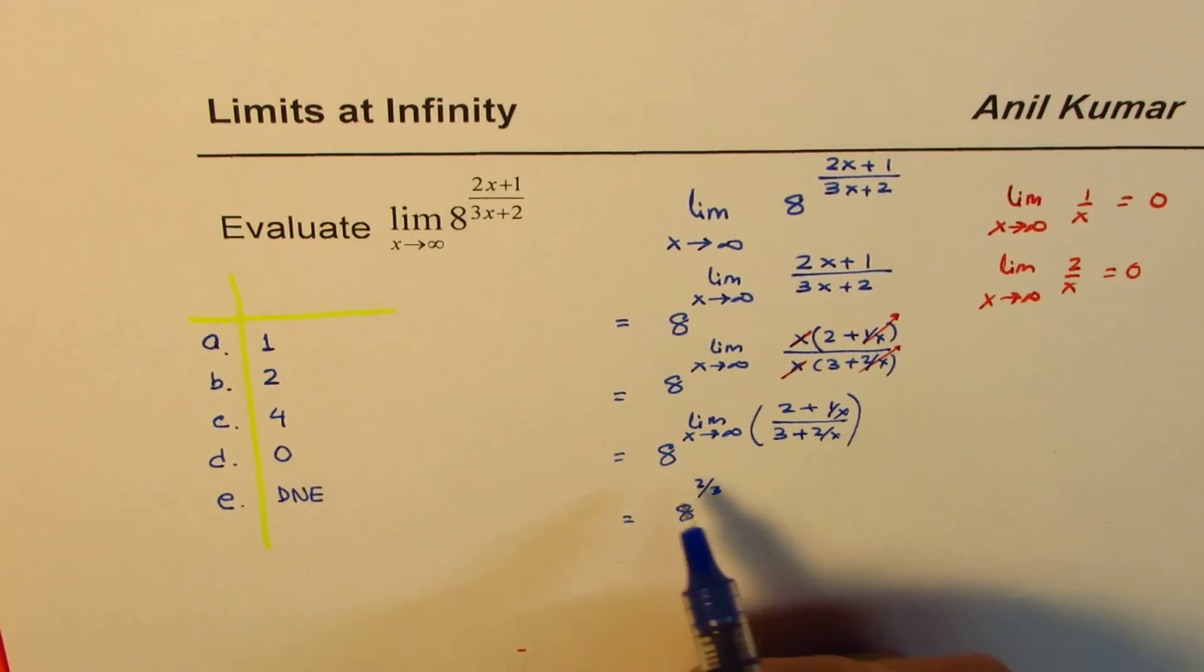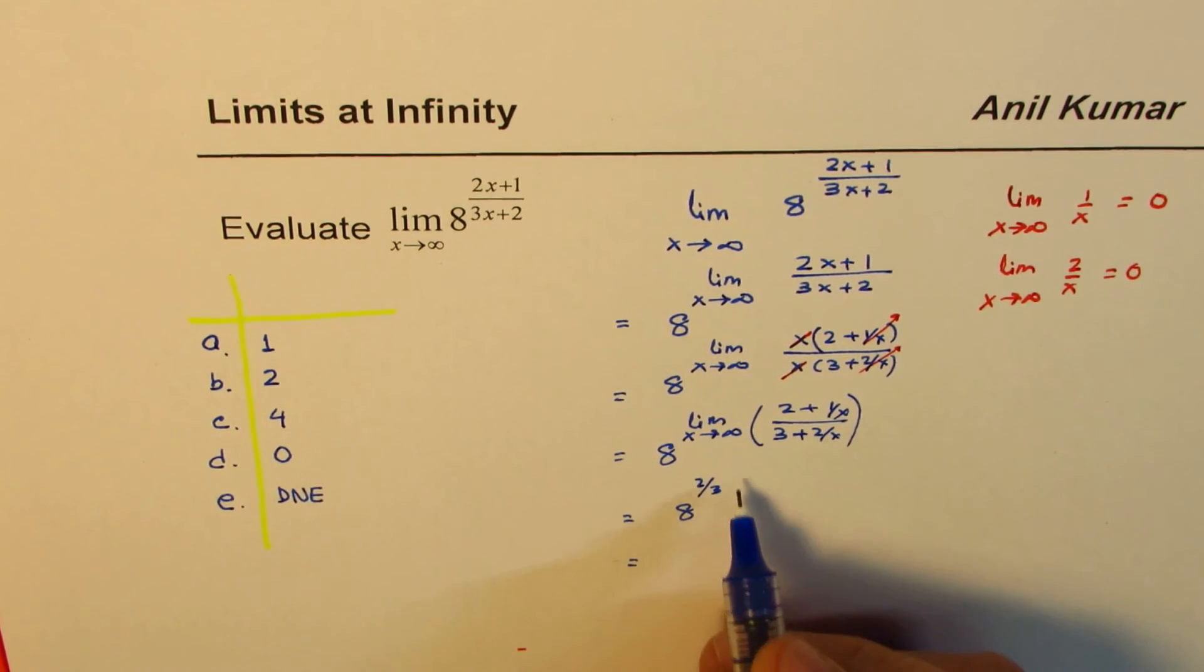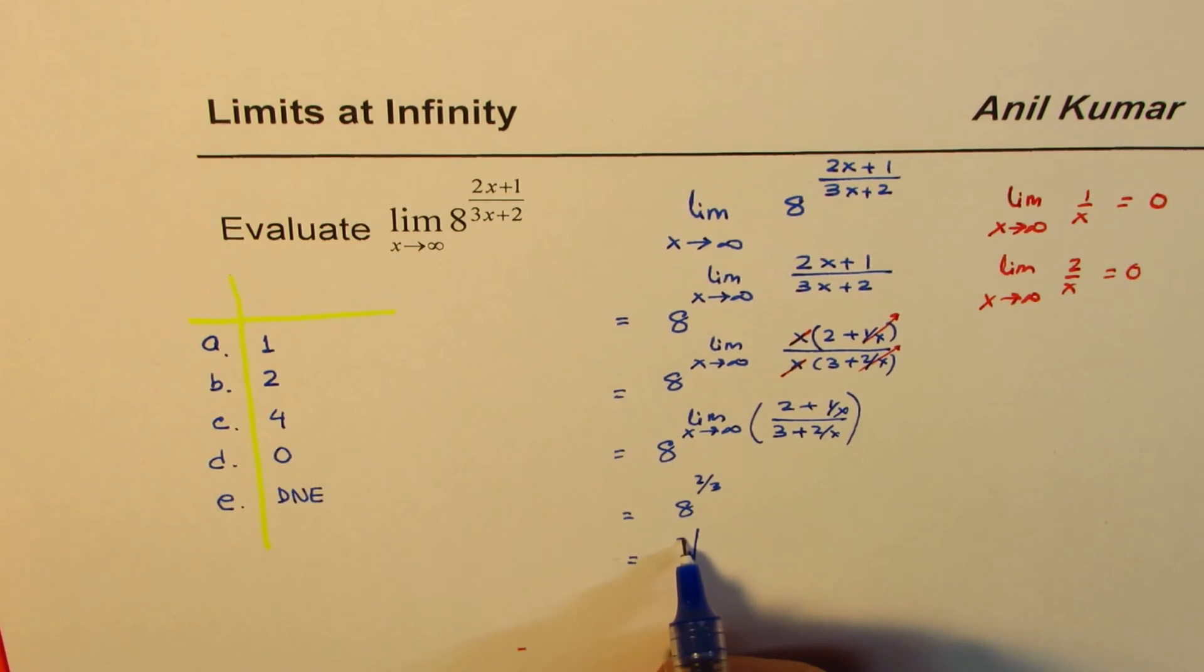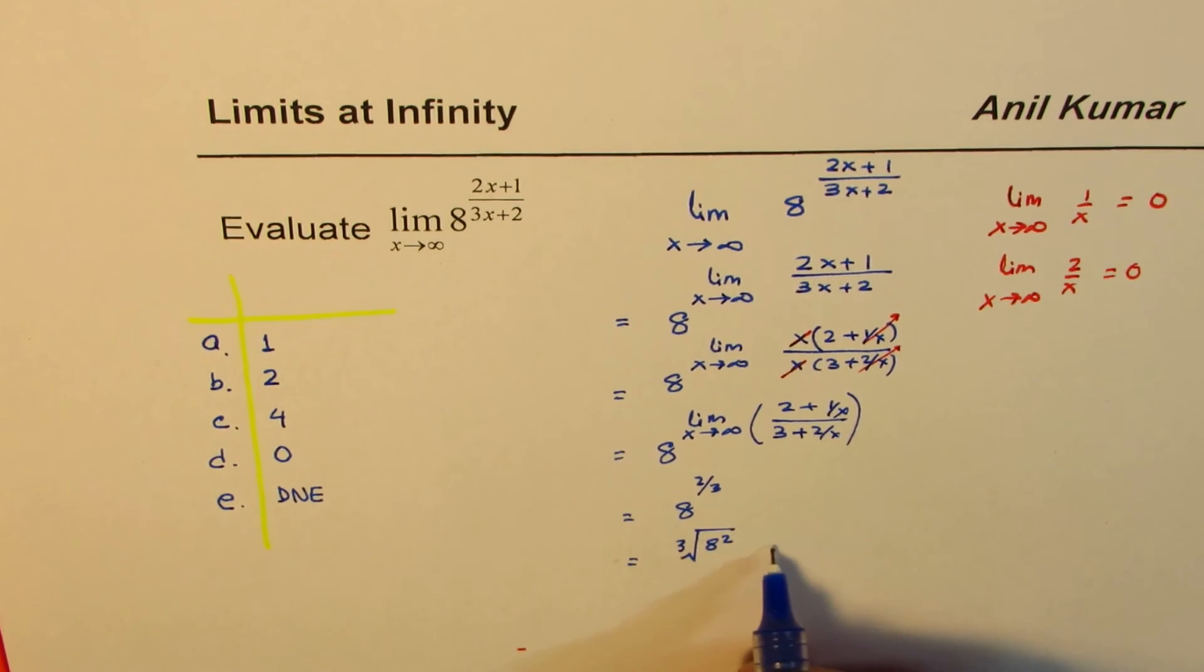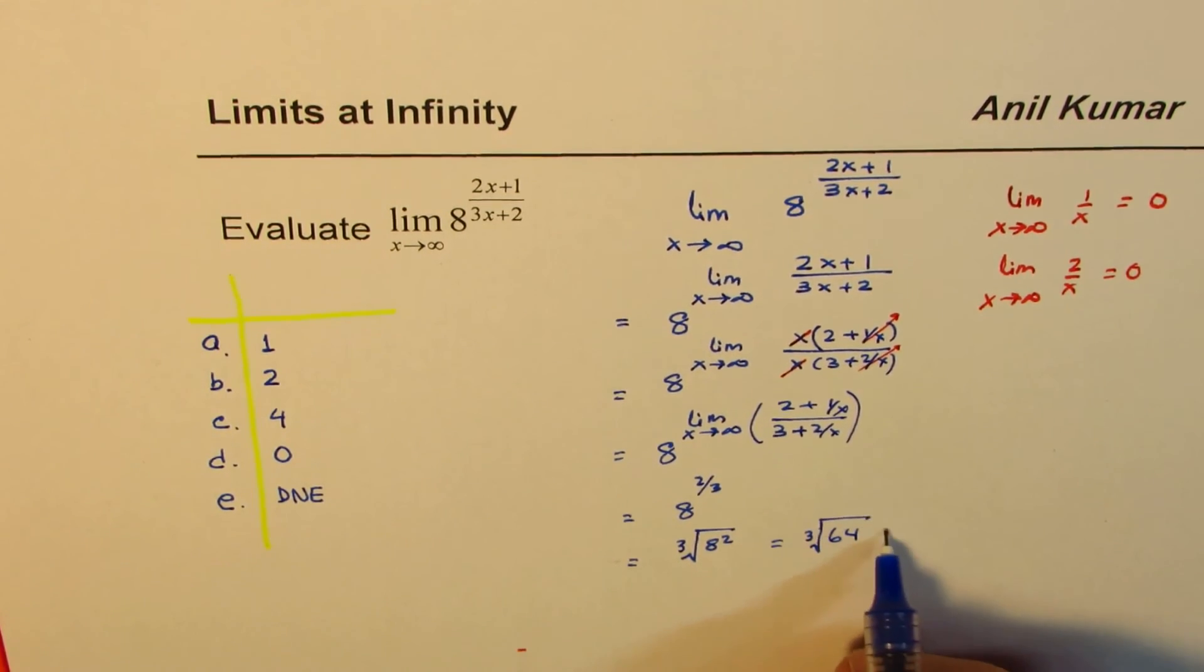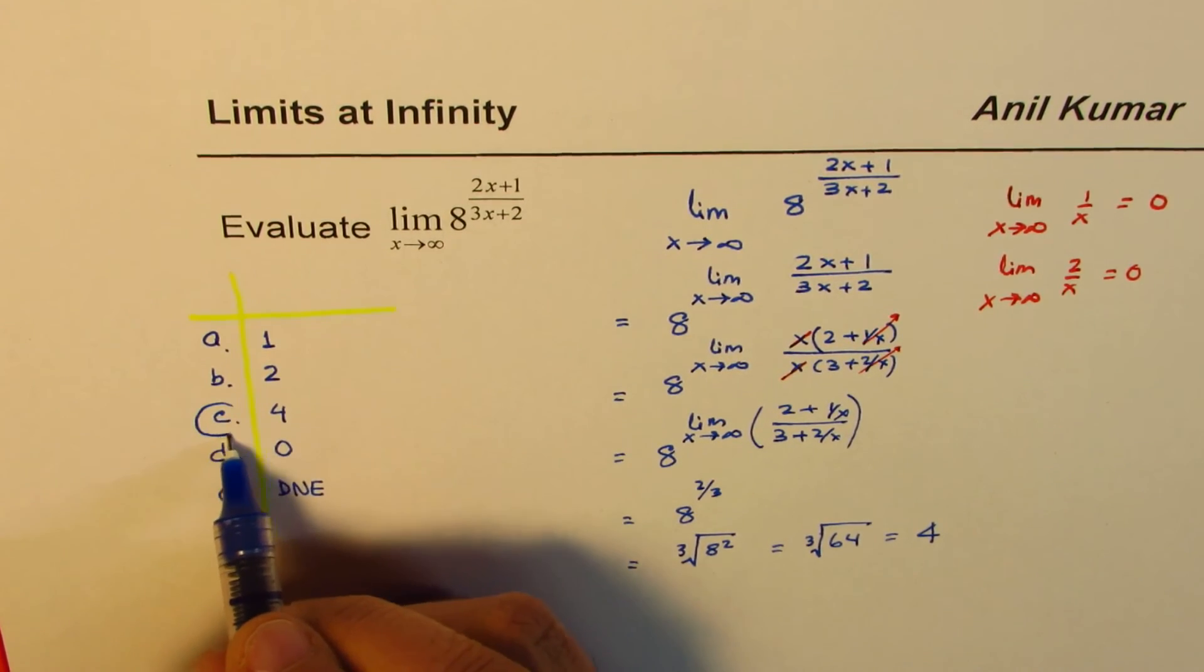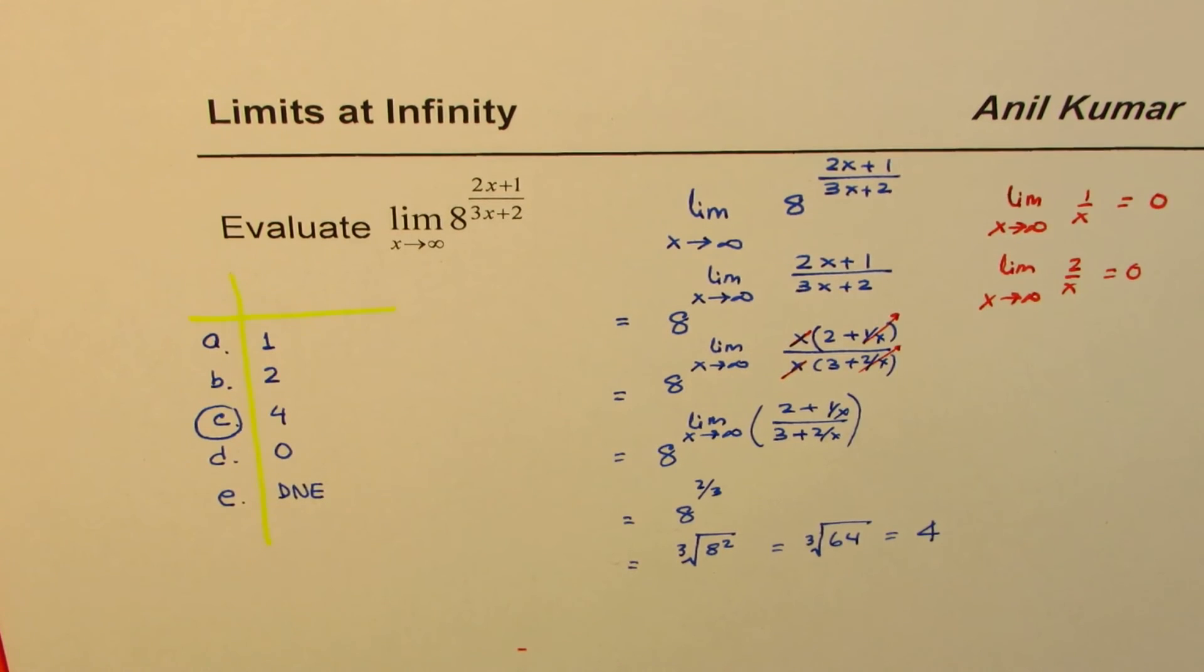So that's what you get. Now, that is, you do cube root of 8 and square it. Or you could do cube root of 8 squared, which is cube root of 64, which is 4. So the answer is option C is correct in this particular case.